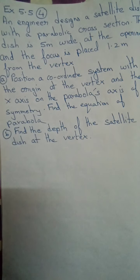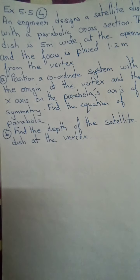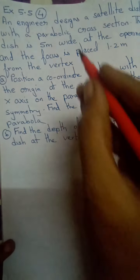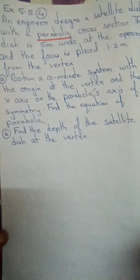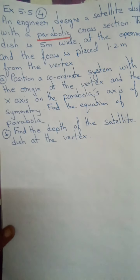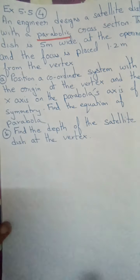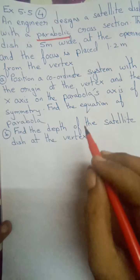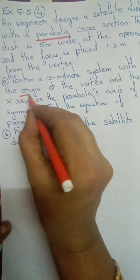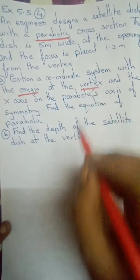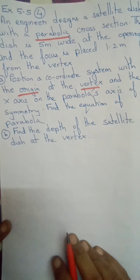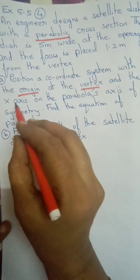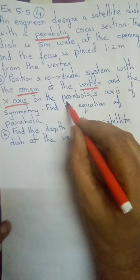An engineer designed a satellite dish. What shape is a parabola? Parabola shape. The parabola vertex is at the origin, meaning the x-axis is the parabolic axis.